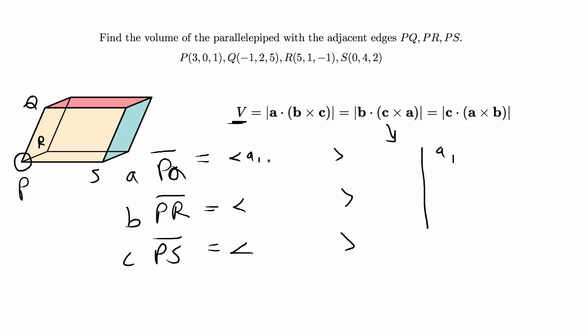a is going to be made up of a1, a2, a3, and so on and so forth for these. The volume will equal to the scalar triple product which is equal to finding the determinant of a1, a2, a3, b1, b2, b3, and c1, c2, c3.